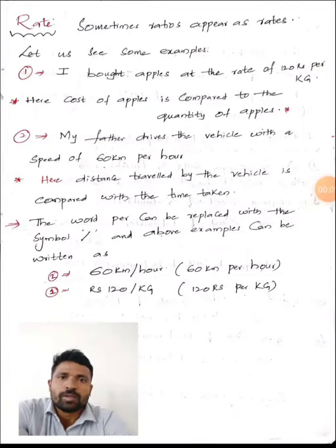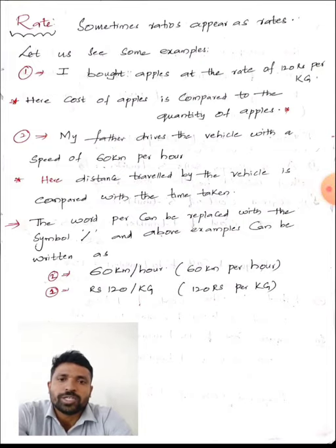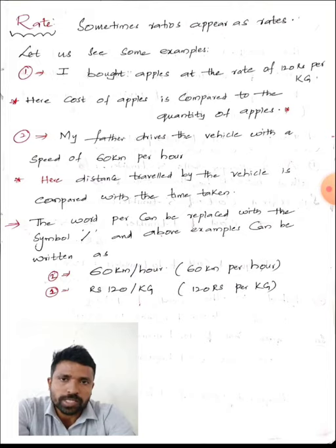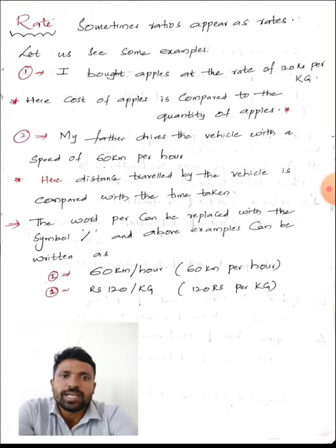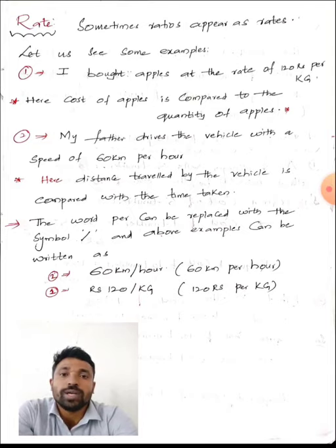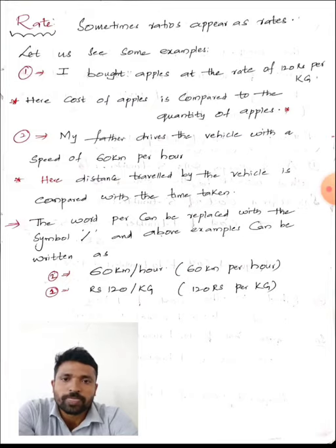Hello children, welcome to the digital class. As a part of ratio and application, today we will discuss the topic of rate. Now, what is rate? If one quantity is compared to the other quantity, then we can say it as a rate. For example, I bought apples at the rate of 120 rupees per kg — here one quantity is in rupees and the other is in kg.